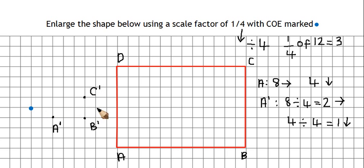Now, D was 8 right and 4 up. So my new shape will be, well, a quarter of 8 is 2. So 2 right and 1 up. So my new D is going to be there. So to finish off the question now, join up the points to make a rectangle. And there's my enlarged shape.